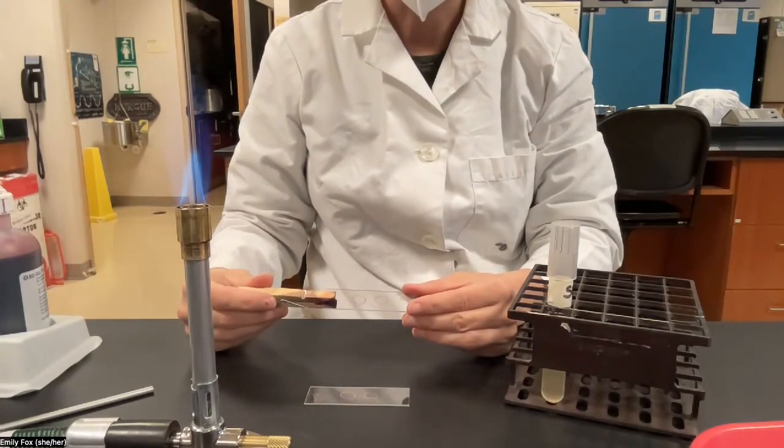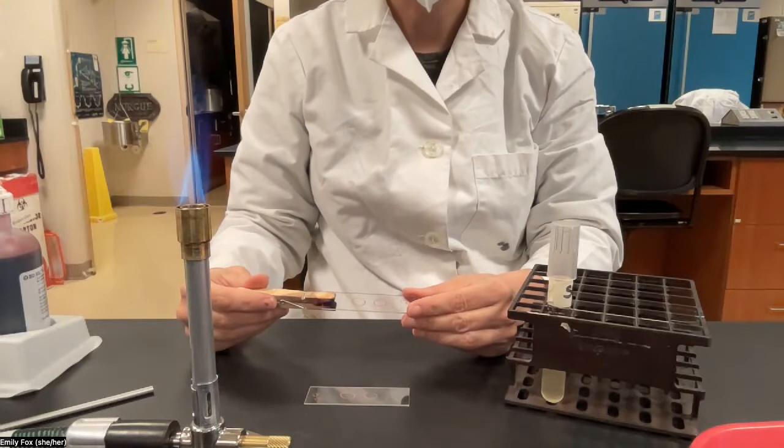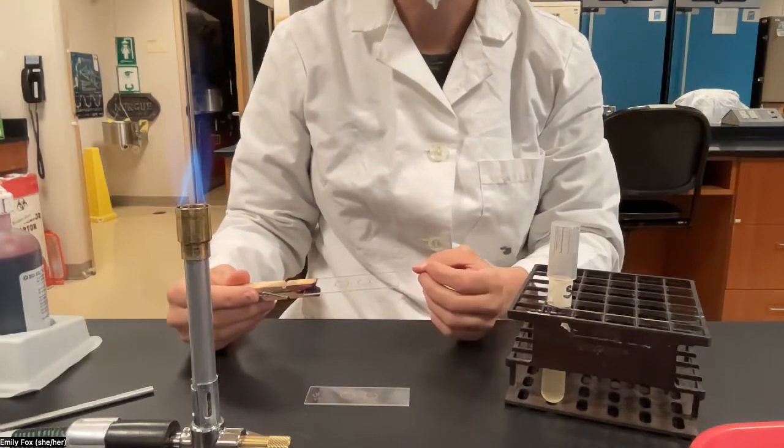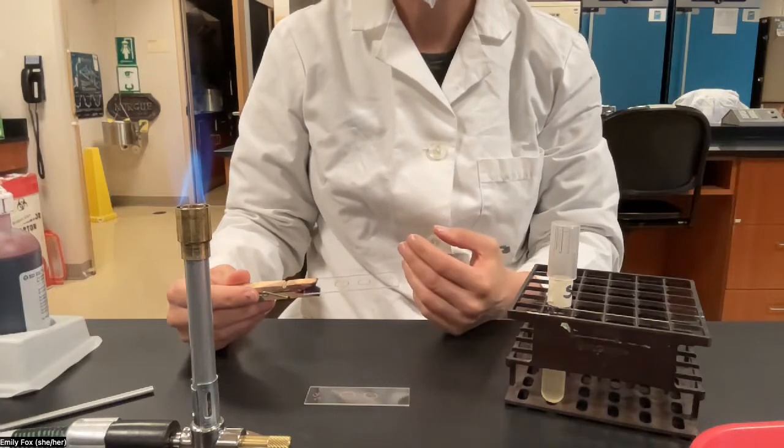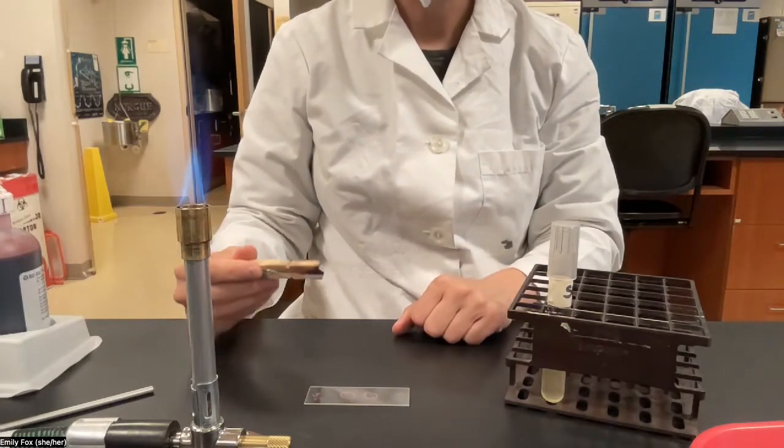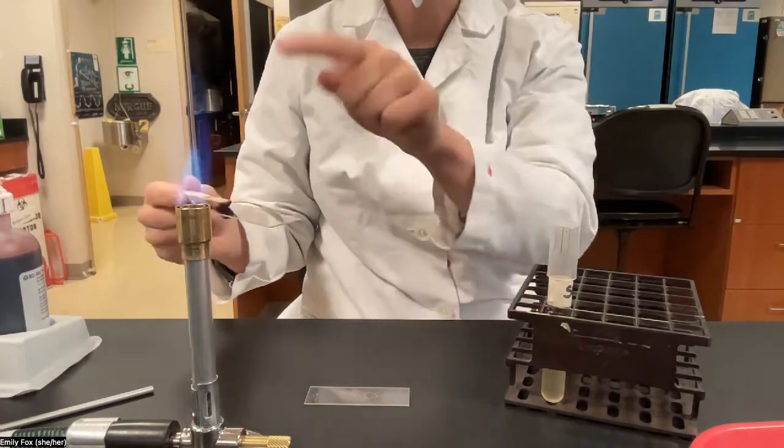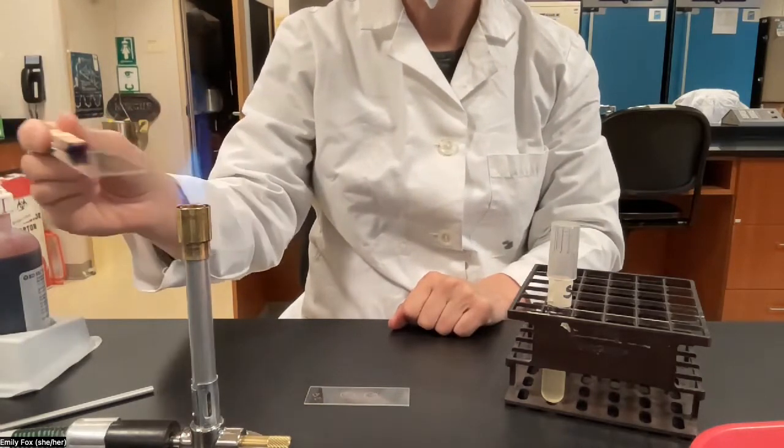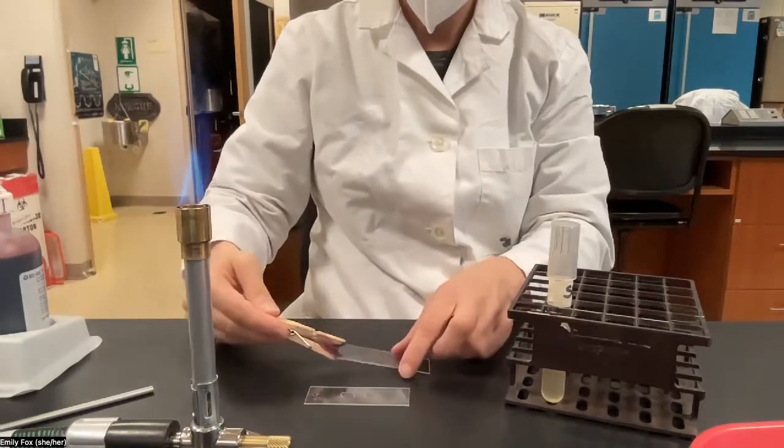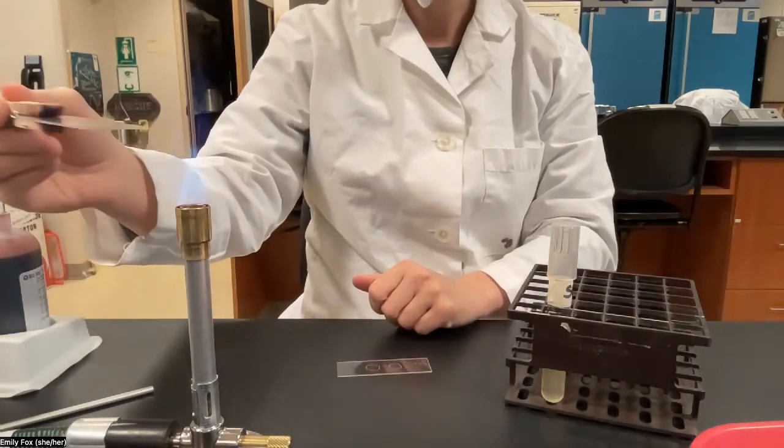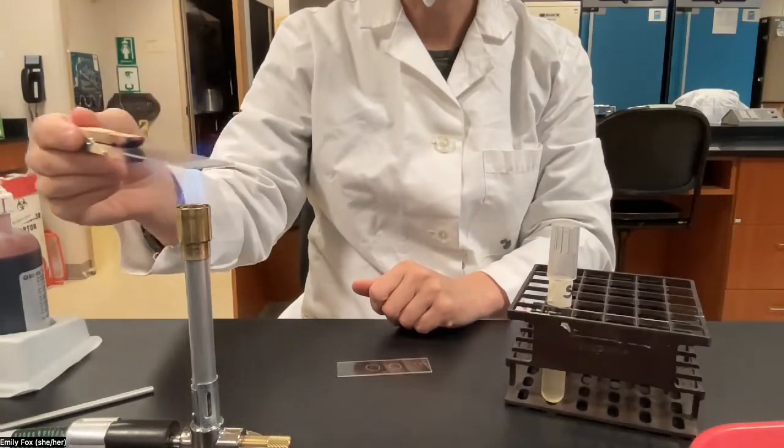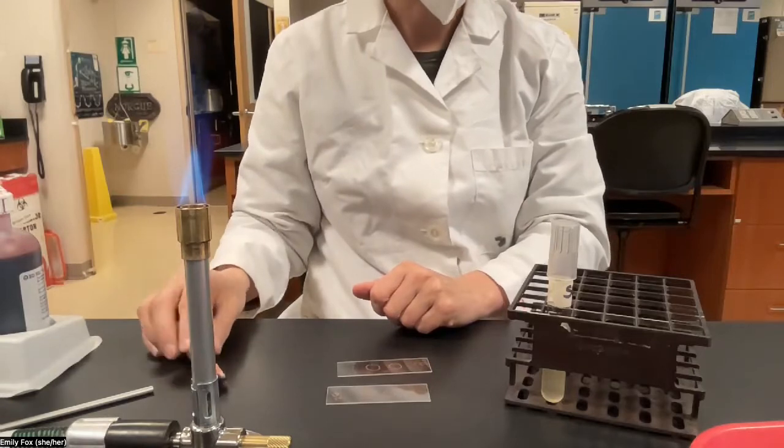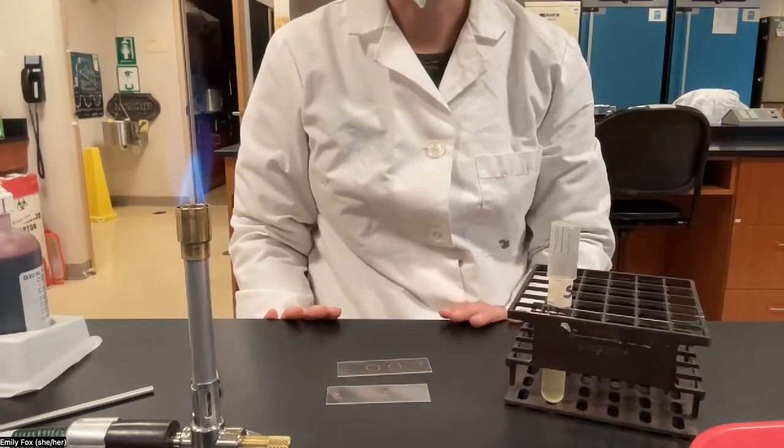it's time to do your heat fix step. This is a really important step. It causes the bacteria to stick to the glass slide so that when you do the staining and the rinse steps, you don't wash the bacteria off your slide. So the heat fix, we're going to pass the slide through the flame four times. One, two, three, four. Let's do both of our slides. And the bacteria are on the upward facing surface. All right, we are ready to do the staining.